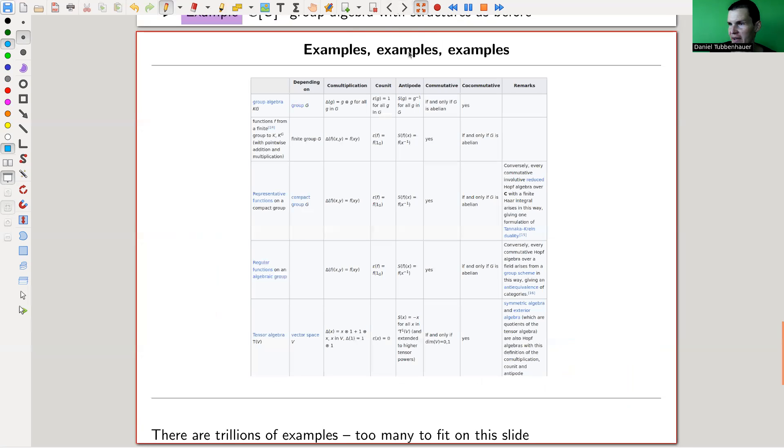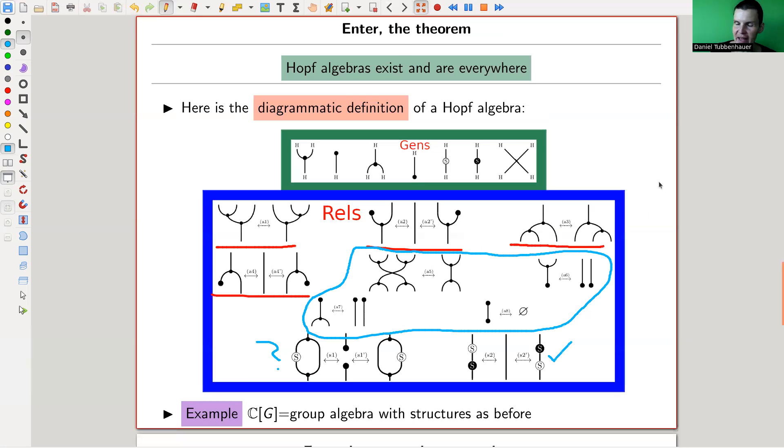And really seriously, just if you open Wikipedia, you will find like a trillion of examples, which I don't have time to go through. It's just the end of the video anyway. So I encourage you to just open the Wikipedia page on Hopf algebras, and you will find a large list of examples. One of them is our group algebra, of course, but there are many, many, many more examples. Let's rather go back to the picture itself.